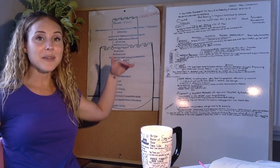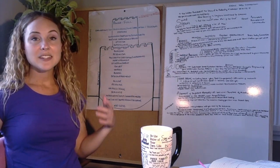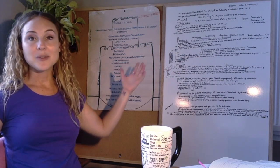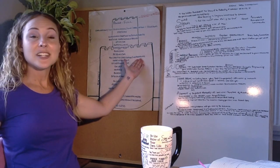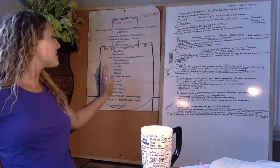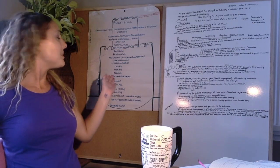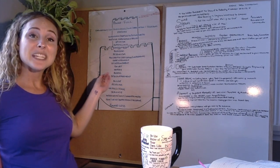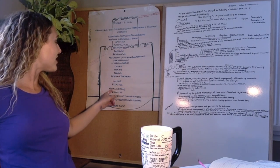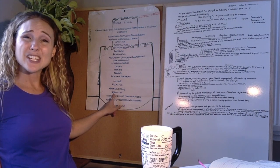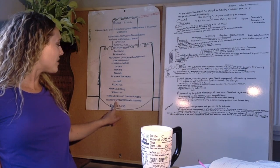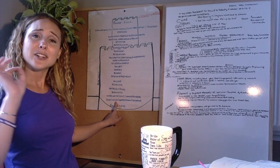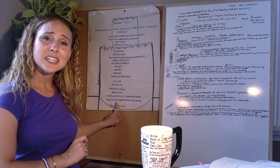And underneath of that parapet are all the negative, downward, depressing emotions that start with boredom, pessimism, frustration, irritation, impatience, overwhelm, disappointment, doubt, blame, discouragement, anger, revenge, hatred, rage, jealousy, insecurity, guilt, unworthiness, fear, grief, depression, despair.